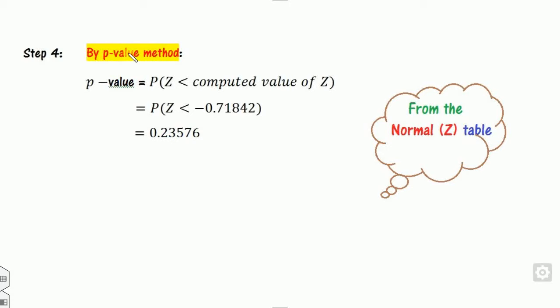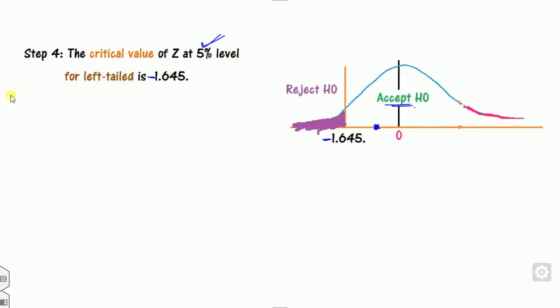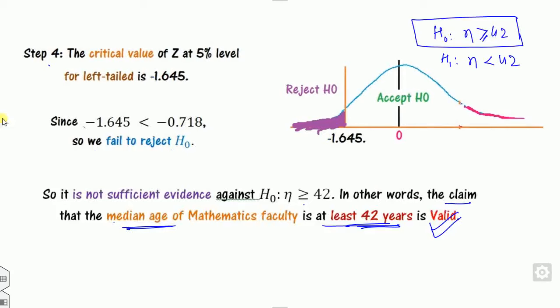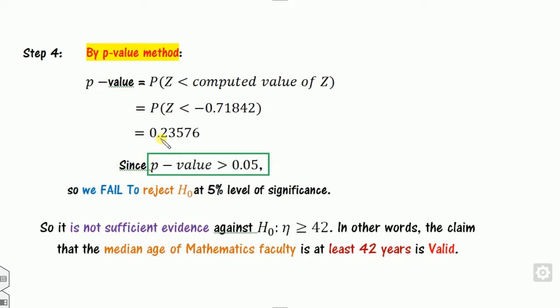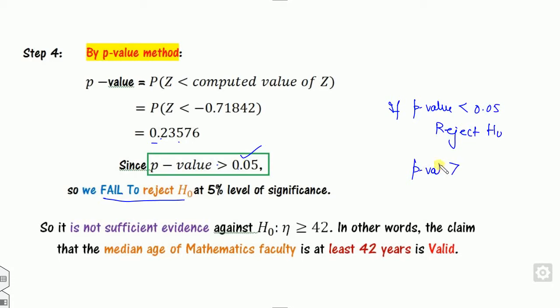Alternatively, using the p-value approach for the same example: since it is a left-tailed test, compute P(Z < −0.718) from the normal distribution table. The p-value obtained is greater than the 5% significance level. Since p-value > 0.05, we fail to reject H₀, confirming the claim is valid.